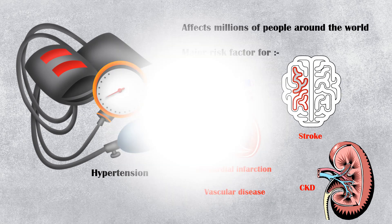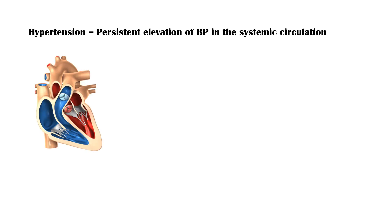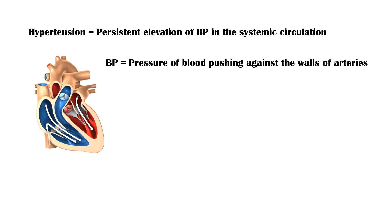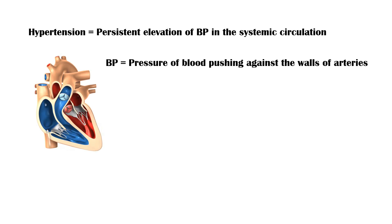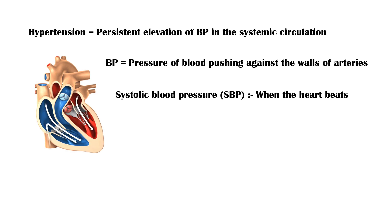Hypertension is referred to as persistent elevation of blood pressure in the systemic arterial circulation. Blood pressure is the pressure of blood pushing against the walls of the arteries. It is measured using two numbers. The first number, called systolic blood pressure, measures the pressure in the arteries when the heart beats.